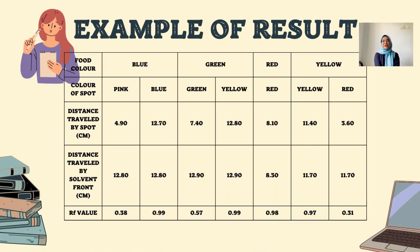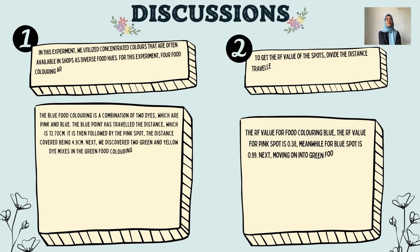In this experiment of basic chromatography, four colors were used: blue, green, red, and yellow. For blue, two spots were visible: pink and blue. For green, two spots were seen: a green spot and a yellow spot. For red, there was only one red spot. For yellow, there were two spots: a yellow spot and a red spot. To calculate the Rf value, divide the distance traveled by the spot by the distance traveled by the solvent front.